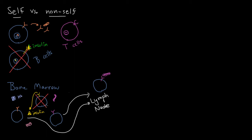This weeding out of B cells that react to self proteins is the first of two mechanisms the body uses to not react to self. The exact same thing happens for T cells, except it doesn't happen in the bone marrow — it happens in the thymus, because that's where T cells mature. In the thymus there is an identical process where T cells differentiate, each gets a unique receptor, and the ones that react too strongly to self in the thymus are killed.